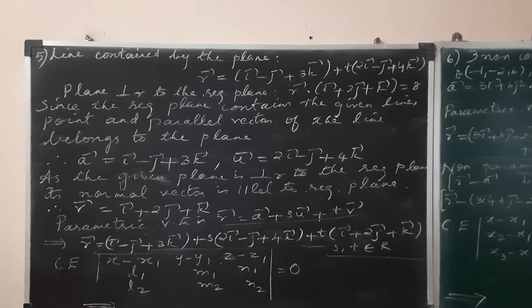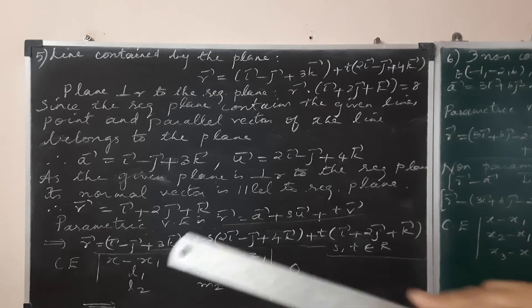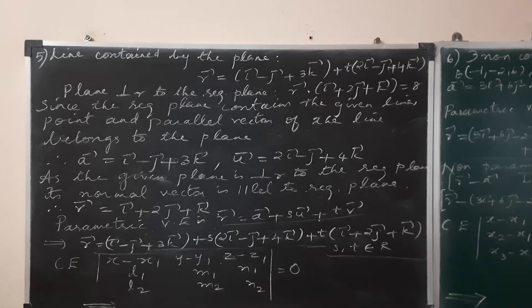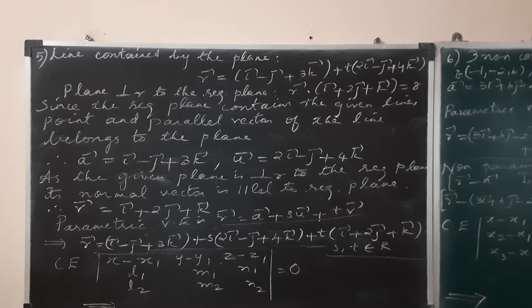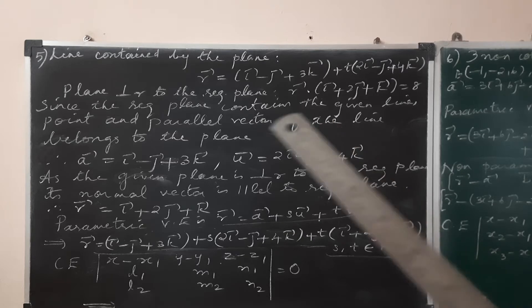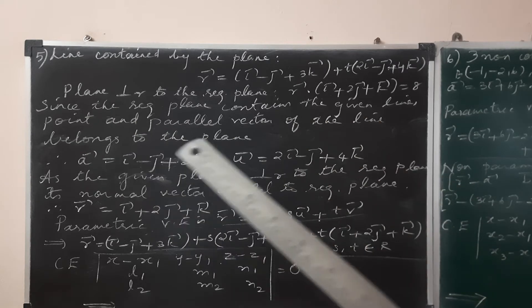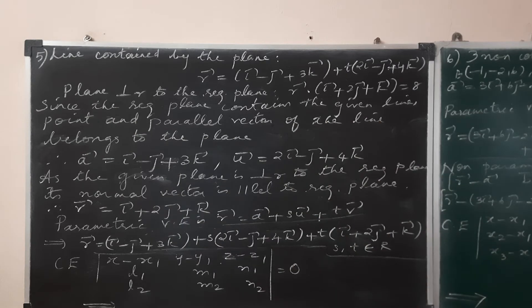We have the data: the line is contained in the required plane. Since the required plane contains the given line, the point and the parallel vector of the line all belong to the plane.